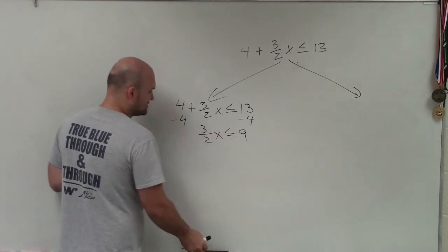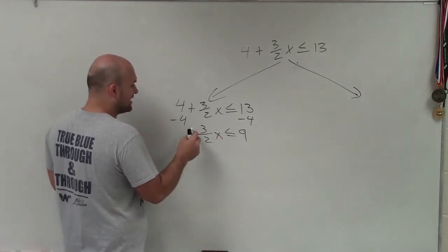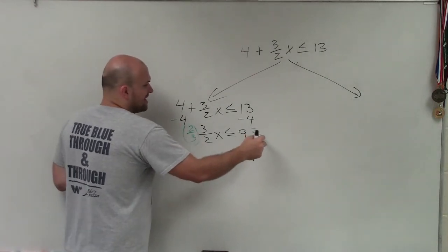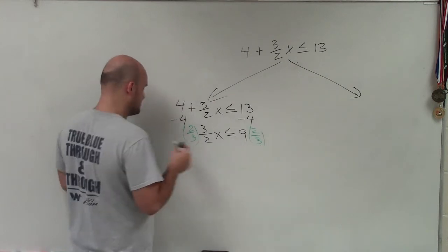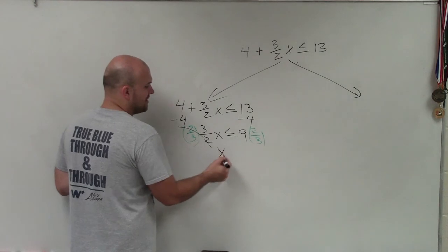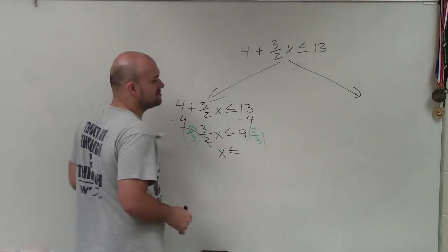Now to solve this, I've got to get rid of my fraction. I can just multiply by the reciprocal. To get rid of fractions, just always think: multiply by the reciprocal. Any time you take a fraction multiplied by its reciprocal, it's going to equal 1. So x is now less than or equal to 9 times 2/3.